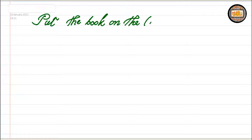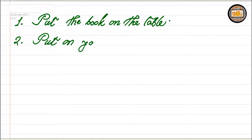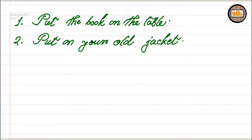So here I have written two sentences — number one and number two. Now just have a look at these two sentences. The first sentence reads: 'Put the book on your table,' and the second reads: 'Put on your old jacket.' Now my point is these two words — or it's better to call them parts of speech. So these are the two parts of speech that are in my focus: 'put the book on the table' and 'put on your old jacket.'